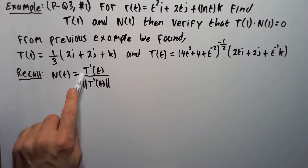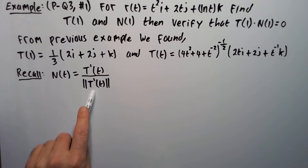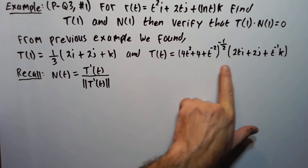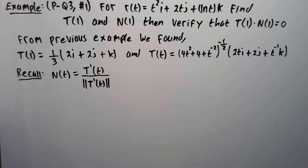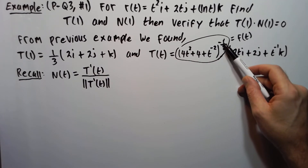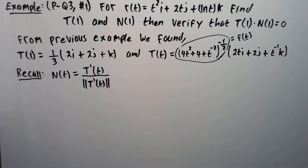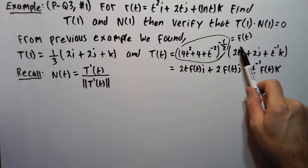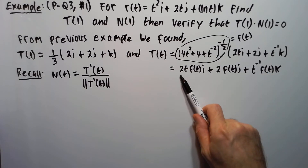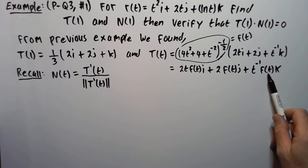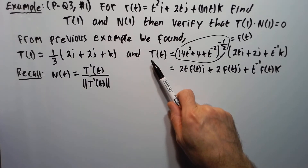Capital N is defined to be capital T prime over the magnitude of capital T prime. We need to find the derivative of the general T expression, which will be messy. I'll make a substitution: let f of T equal the quantity 4T squared plus 4 plus T to the minus 2, raised to the minus one half. Rewriting capital T using f, we get: capital T equals 2T times f of T in the i direction, plus 2 times f of T in the j direction, plus T to the minus 1 times f of T in the k direction.